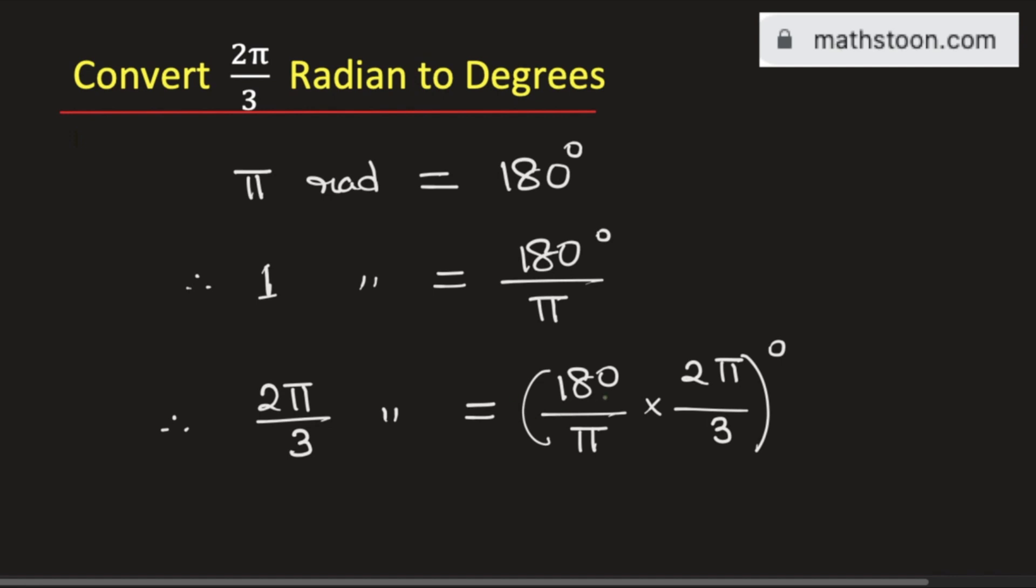Now we will simplify it. See that π and π get cancelled. And if we divide 180 by 3 we get 60. So we need to put 0 here.